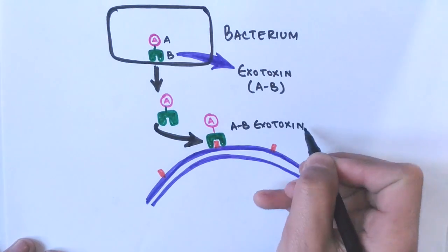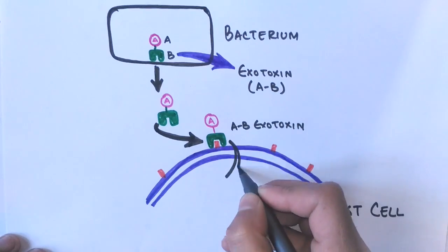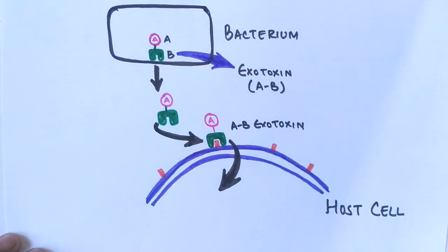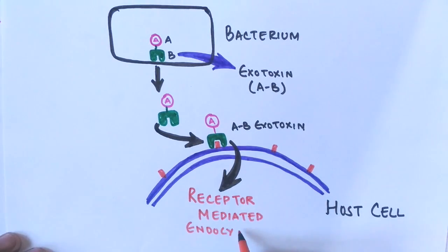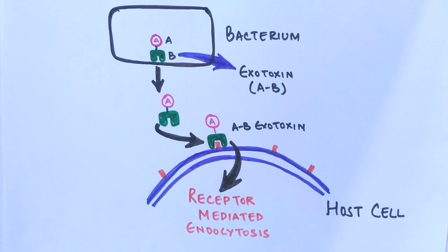The B part of the exotoxin will confirm binding with the host receptor, and then the receptor mediates this exotoxin molecule inside the cell by endocytosis. This process is called receptor-mediated endocytosis. This is how the AB exotoxin enters the cell and reaches the cytoplasm.